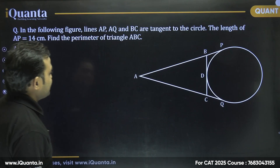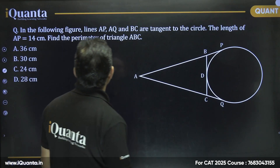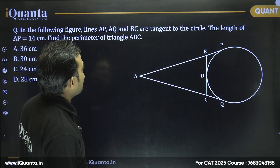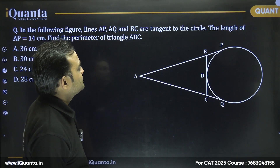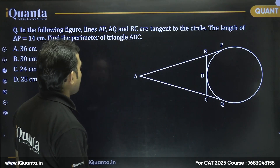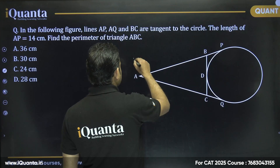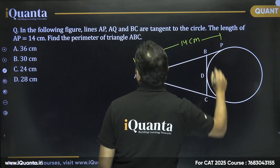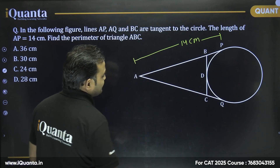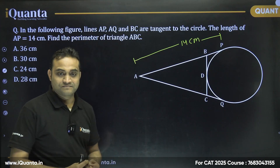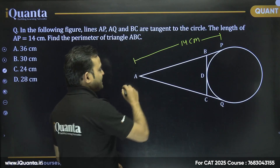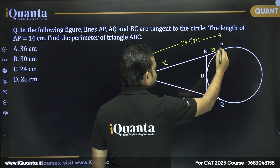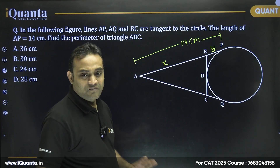Now the second question: in the following figure, lines AP, AQ, and BC are tangents to the circle. The length of AP is 14 centimeters. Find the perimeter of triangle ABC. Let's take AB as x and BP as y.